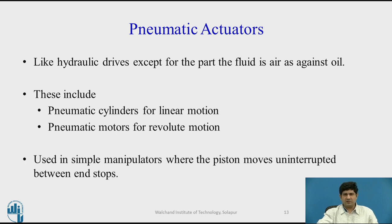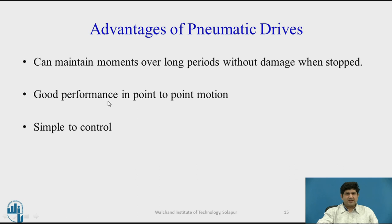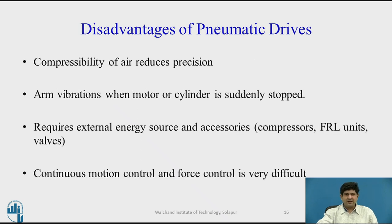Pneumatic actuators are typically at the lower end of the payload spectrum. The main advantage which stands out is lower cost, ease of maintenance, and the fact that many industrial setups already have an existing pneumatic setup for other purposes which can be reused. Cost is by far the most important advantage of pneumatic drives. They are also simple to control and quite suitable for point-to-point motion. On the other hand, compressibility of air reduces precision, there are vibrations especially when suddenly stopped, and you still need accessories, external sources, filters, and all that — which adds to cost. Continuous motion control is very difficult and very expensive.